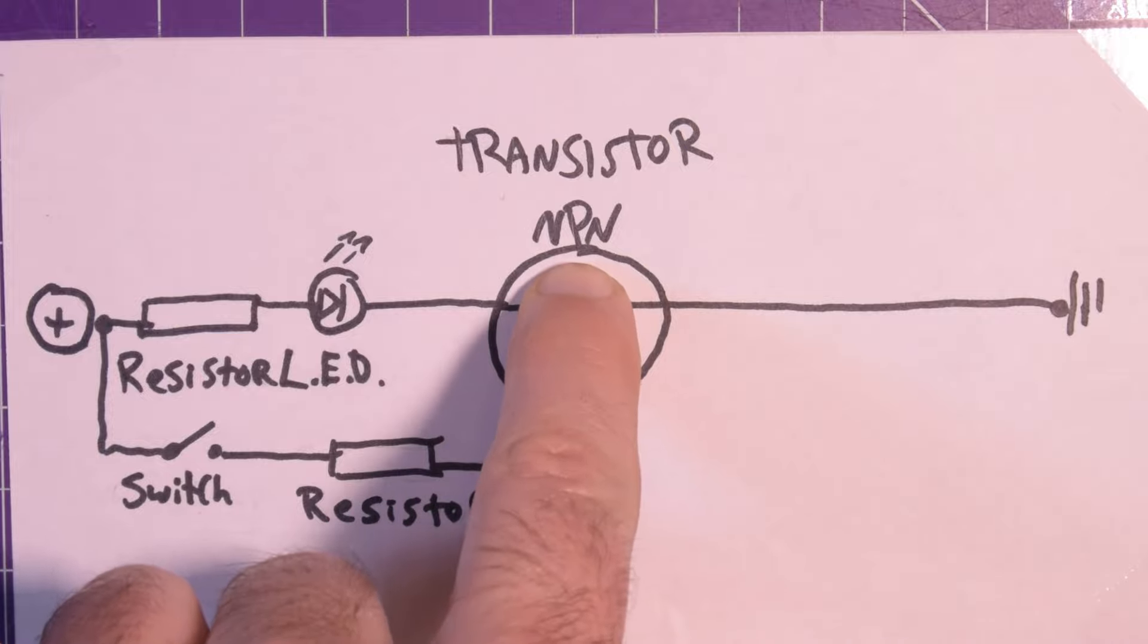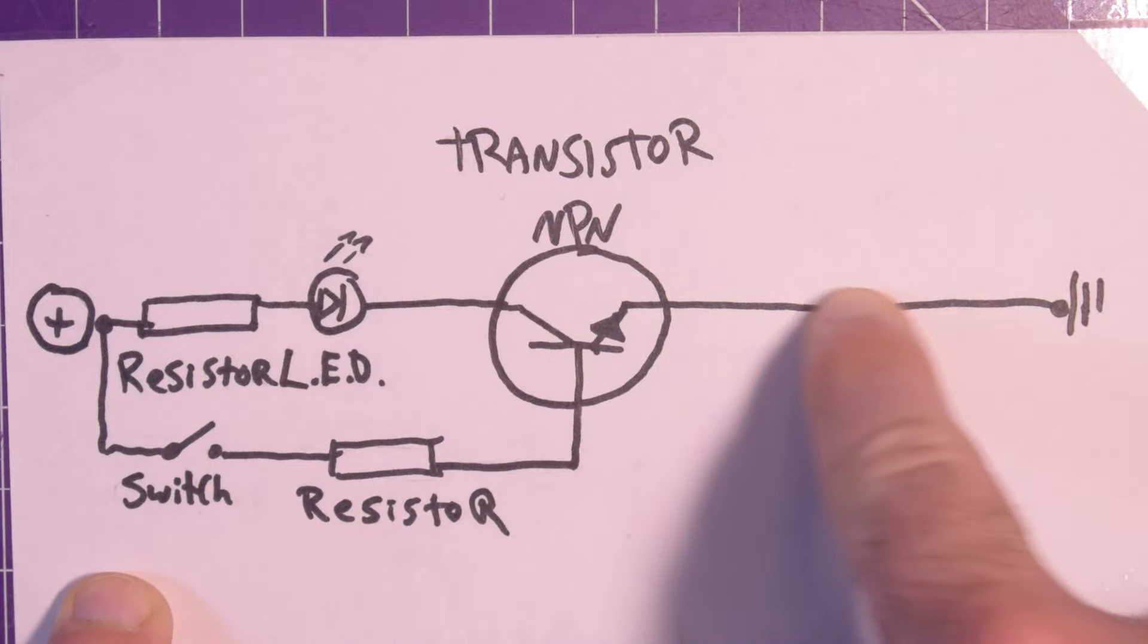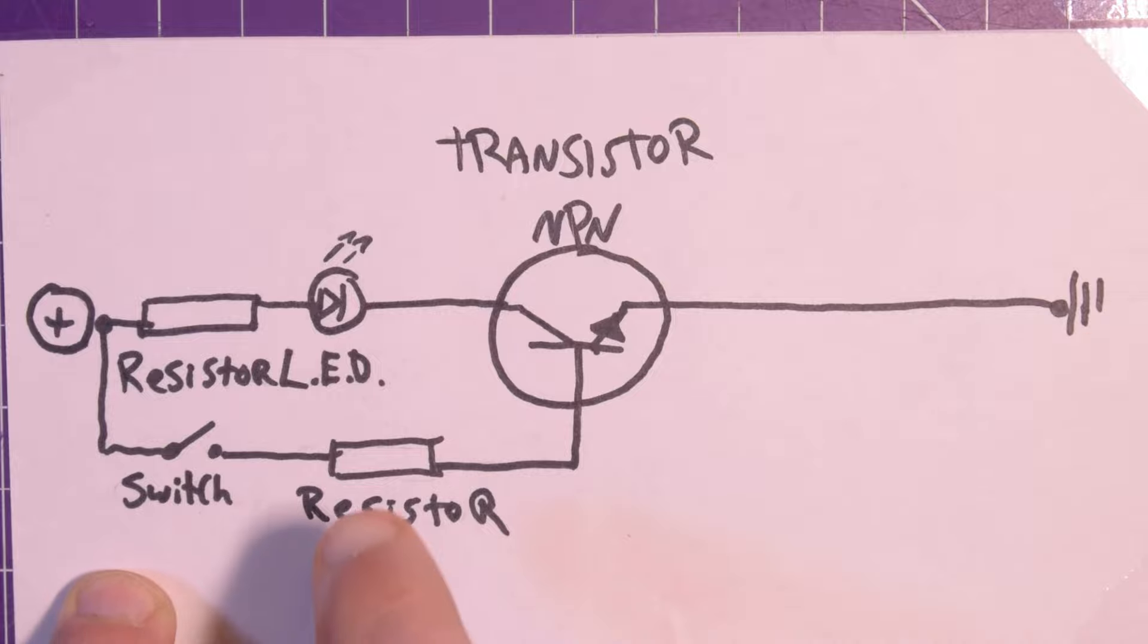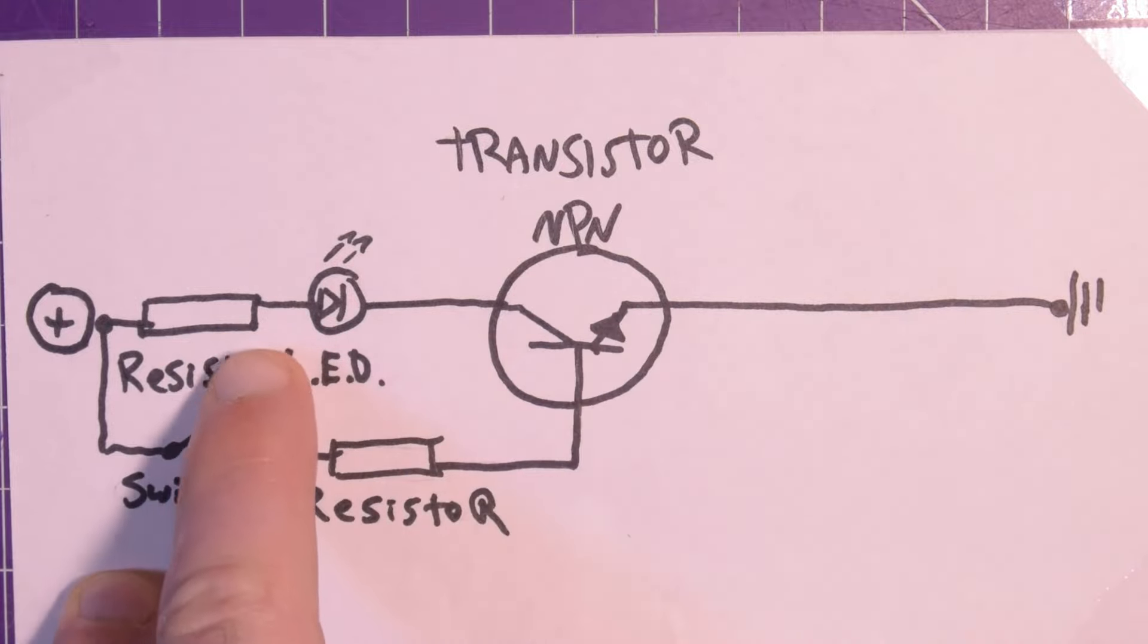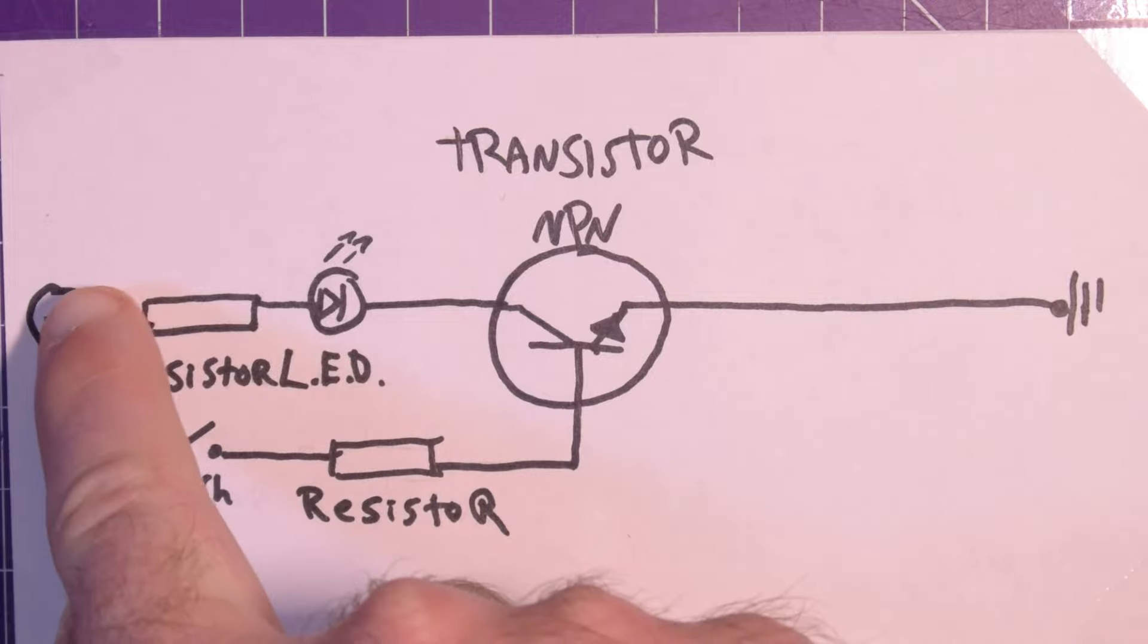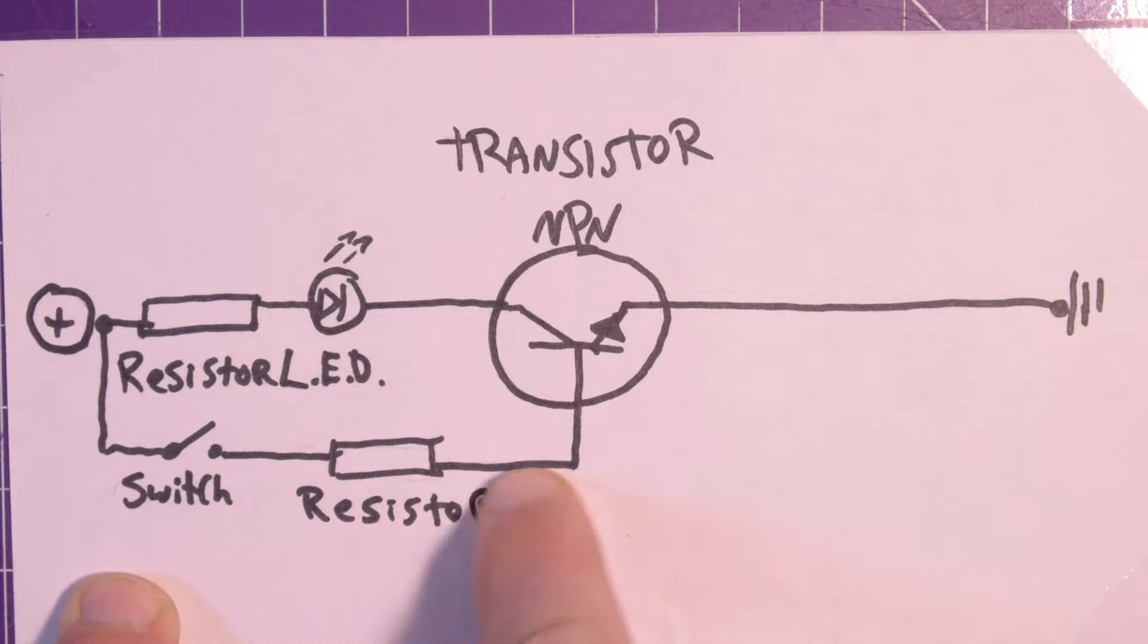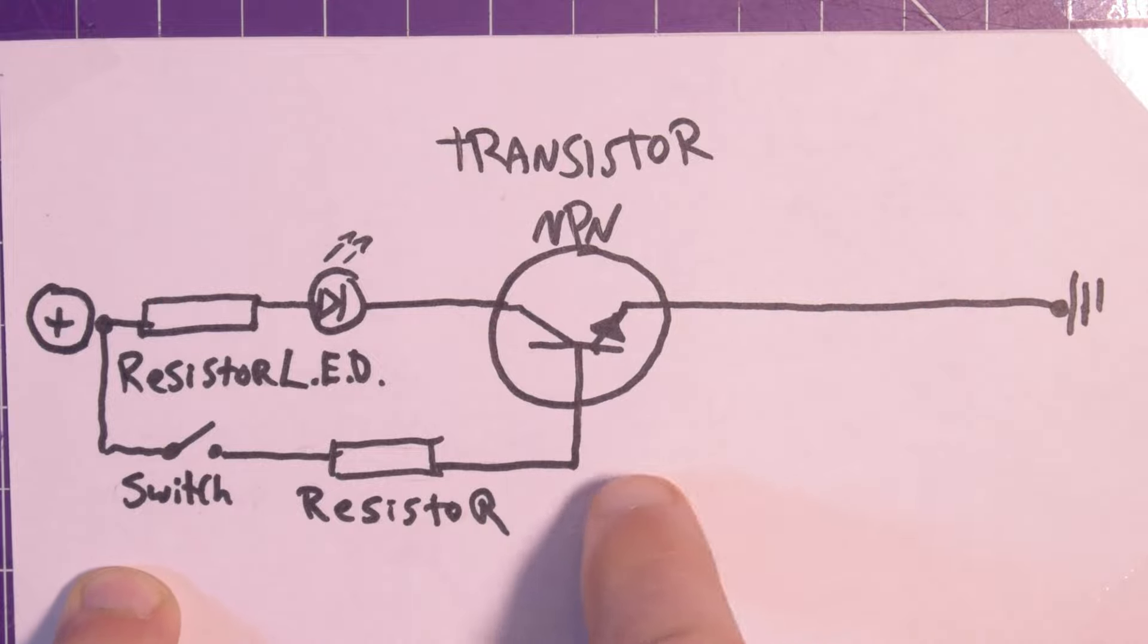The one thing I'll tell you about using an NPN transistor is that since current needs to flow through the base and to ground, you have to make sure that your load, whatever you're switching, is on the positive side of the transistor. Because if we put a load here, then that means our current has to flow through the base resistor and through the load. It may work in some situations, but in general it's easier to do it like this.